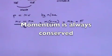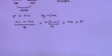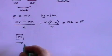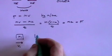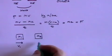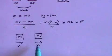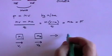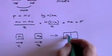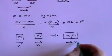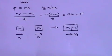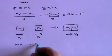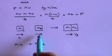Momentum is always conserved, provided there is no external force. If a body of mass m1 travelling at velocity v1 hits another object of mass m2 travelling at v2 — where v1 must be greater than v2 — and the two stick together, they produce a combined object of mass m1 plus m2 travelling at a new velocity v3. Momentum is conserved, so m1v1 plus m2v2 equals (m1 plus m2) times v3.